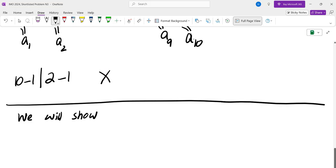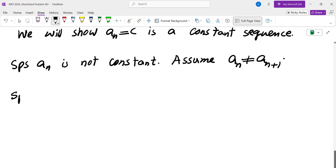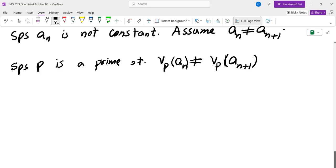We're going to show that the sequence must be constant. So we will show A n equals C is a constant sequence. So let's assume it is not constant. So what does that mean? We have two consecutive terms that are different. So suppose A n is not constant. So assume A sub n is not the same as A n plus 1. So if they're not the same, it means there is a prime that has different exponents in A n and A n plus 1. So suppose P is a prime such that V P of A n is not the same as V P of A n plus 1.